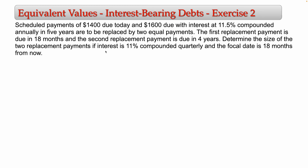This problem says: scheduled payments of 1,400 due today and 1,600 due with interest at 11.5% compounded annually in five years are to be replaced by two equal payments. The first replacement payment is due in 18 months and the second replacement payment is due in four years. Determine the size of the two replacement payments if interest is 11% compounded quarterly and the focal date is 18 months from now.